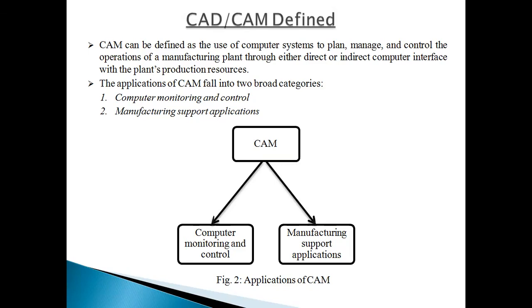In the case of indirect use of computer, you run a program in MasterCAM software, collect the data, copy the program to your system, and put that program into the machine. The machine operates as per the given program — that is called indirect use of the computer. CAM is also divided into two parts: computer monitoring and control, and manufacturing support application.